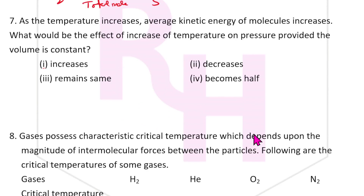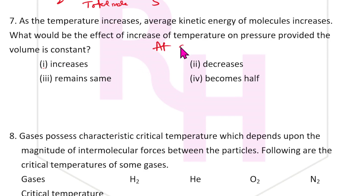Question 7: As temperature increases, the average kinetic energy of molecules increases. What is the effect of increasing temperature on pressure when volume is constant? At constant volume, pressure and temperature are directly proportional. So the answer is: pressure increases.